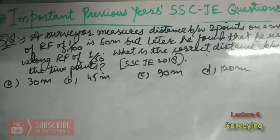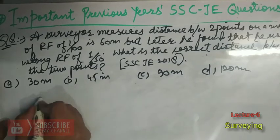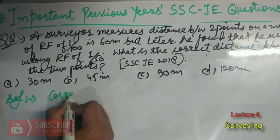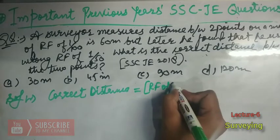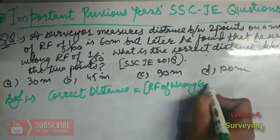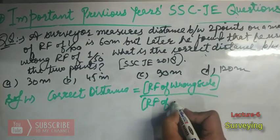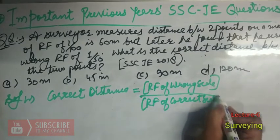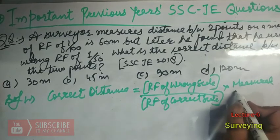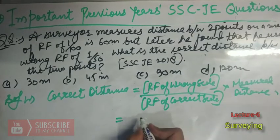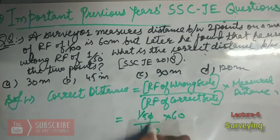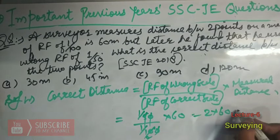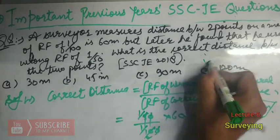Using the formula: correct distance = (RF of wrong scale / RF of correct scale) × measured distance. RF of wrong scale is 1/50 and RF of correct scale is 1/100, and the measured distance is 60 m. Substituting: (1/50) / (1/100) × 60 = 2 × 60 = 120 meters. So the correct distance is option D, 120 meters.